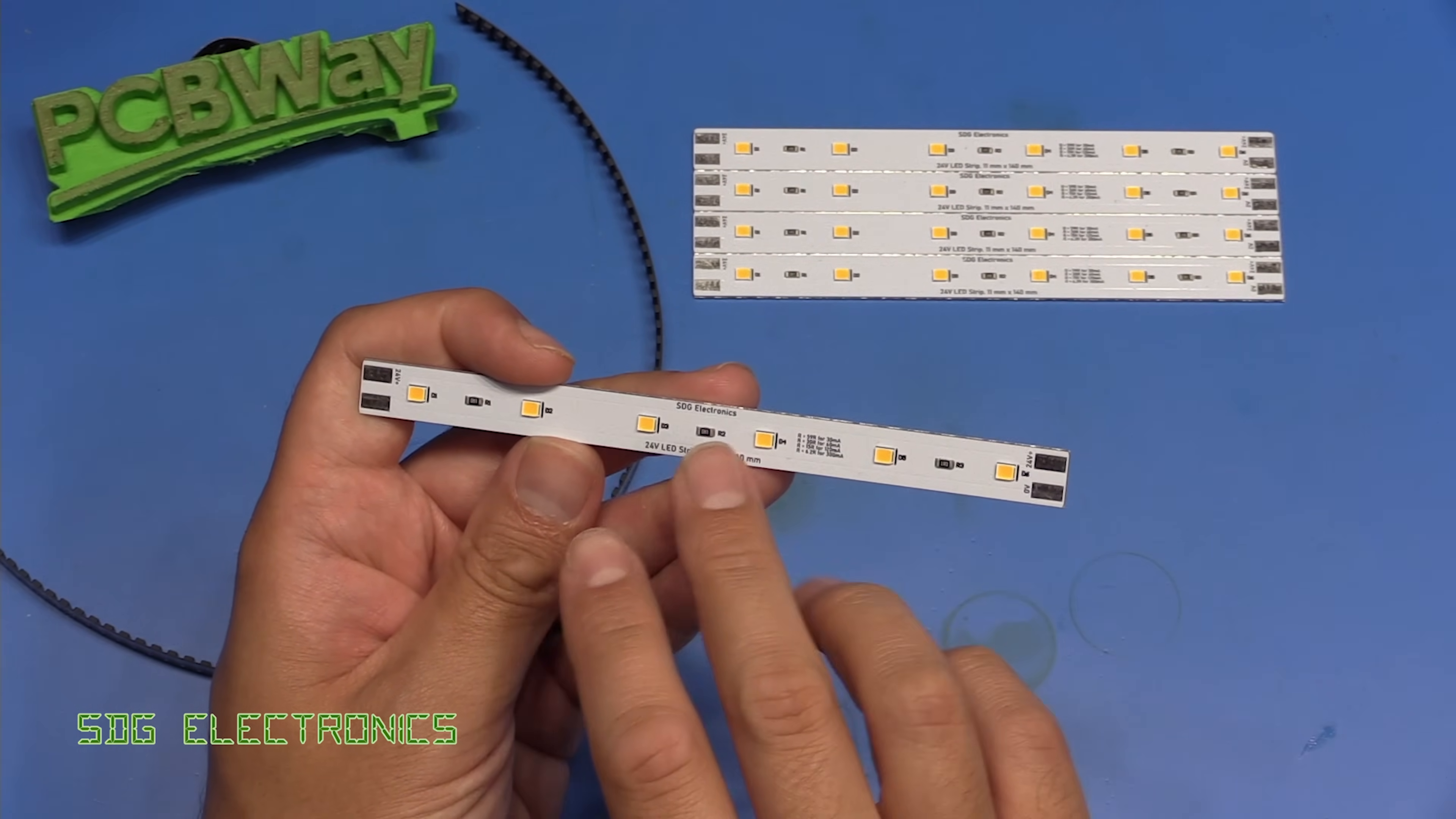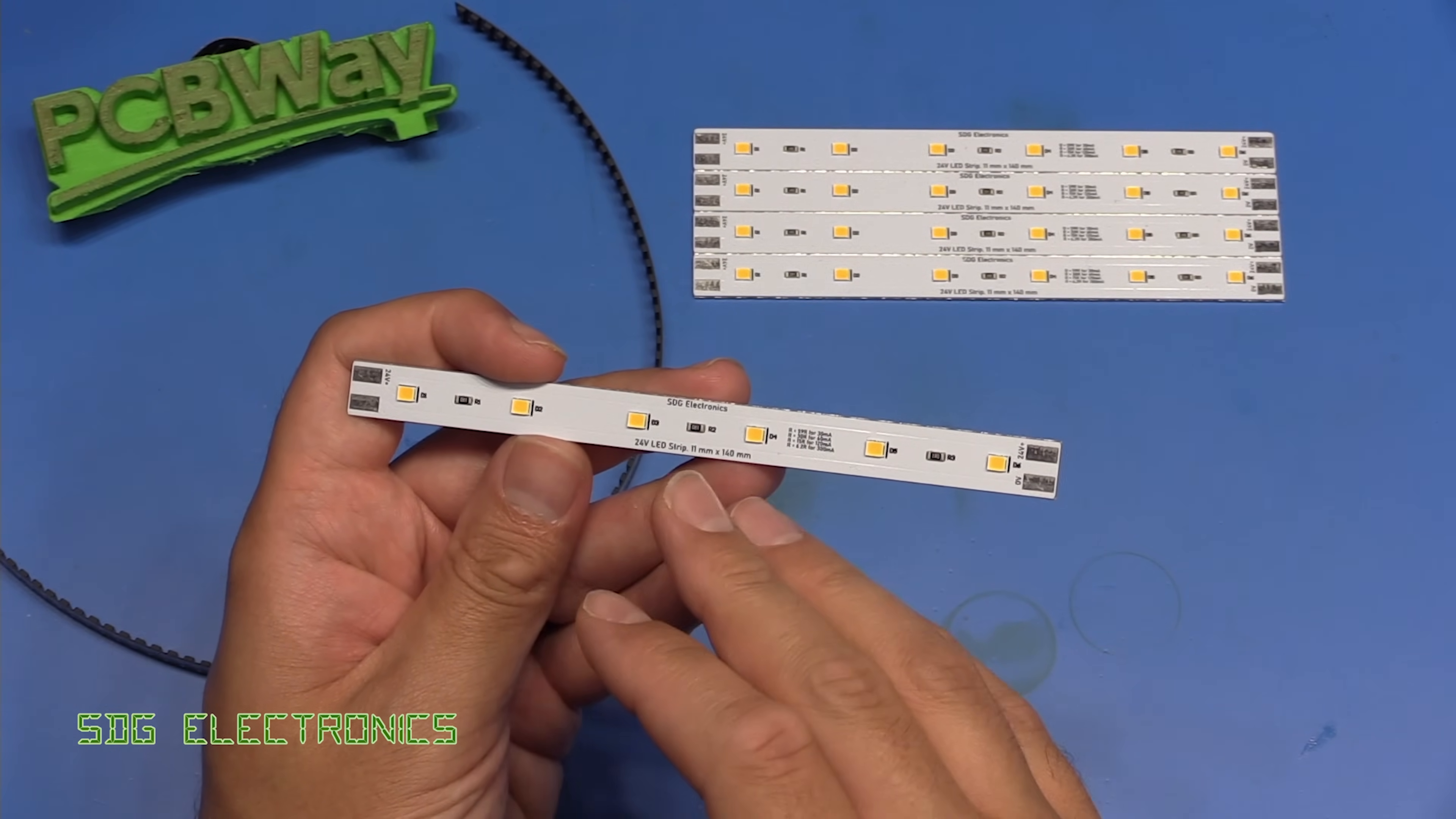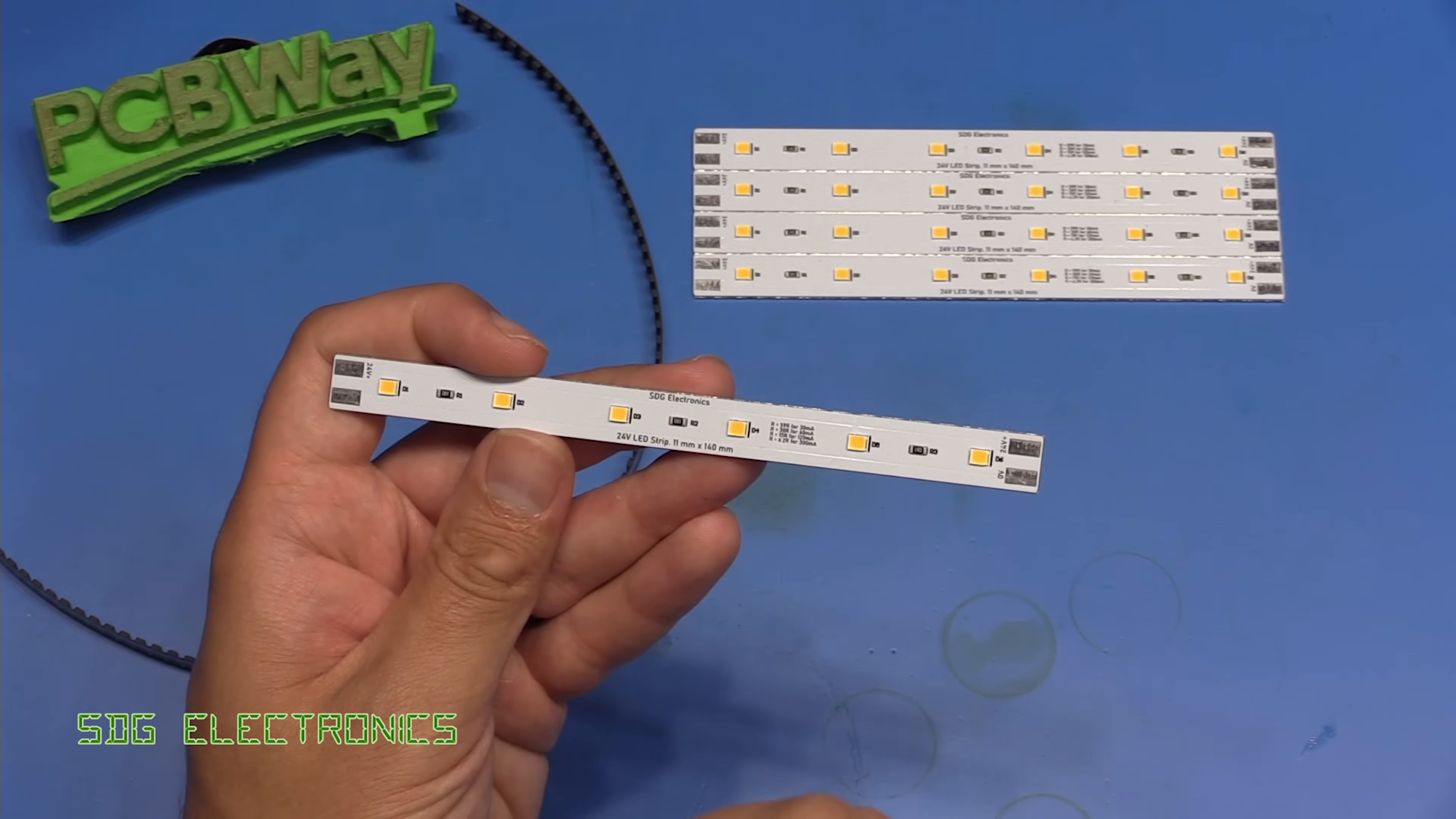During that video we discussed various methods of driving these LEDs. Now what I want is the ability to control the brightness of these LEDs but also limit the maximum current at 150 milliamps.